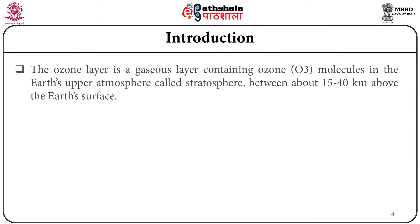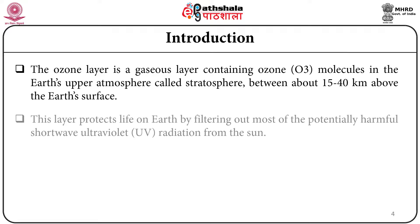What is the ozone layer? The ozone layer is a gaseous layer containing ozone molecules in the earth's upper atmosphere area called the stratosphere, between about 15 to 40 km above the earth's surface. This layer protects life on earth by filtering out most of the potentially harmful short-wave ultraviolet radiation from the sun.